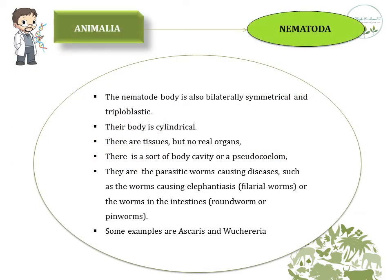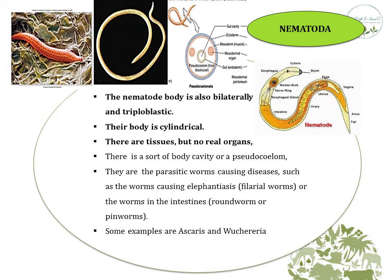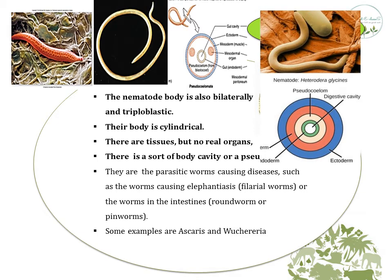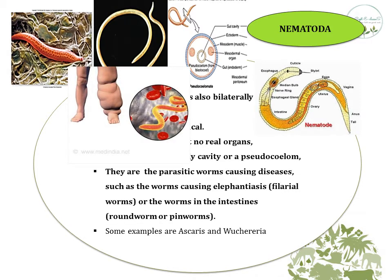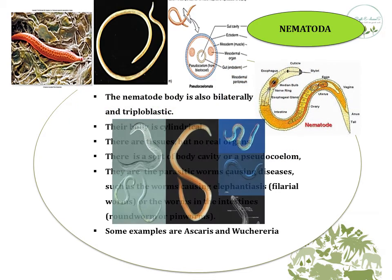The fourth division is Nematoda. The nematode body is also bilaterally symmetrical and triploblastic — having three germ layers. The body is cylindrical. There are tissues but no real organs. There is a sort of body cavity called a pseudocoelom. They are parasitic worms that cause many diseases, like filarial worms which cause elephantiasis, and roundworms or pinworms found in the intestine. Some other examples of nematodes are Ascaris and Wuchereria.